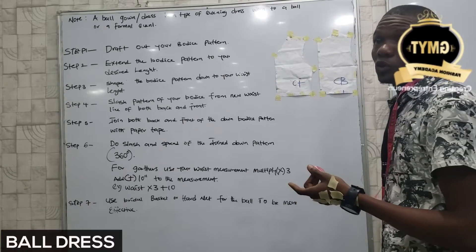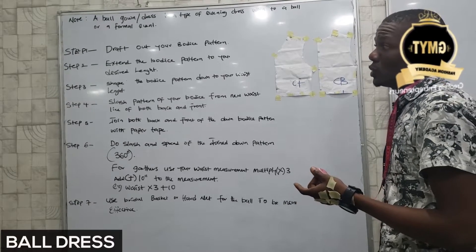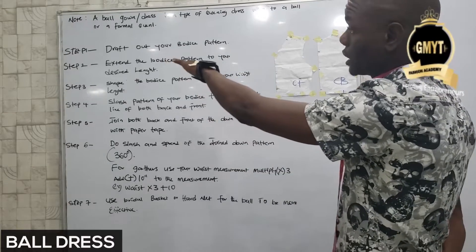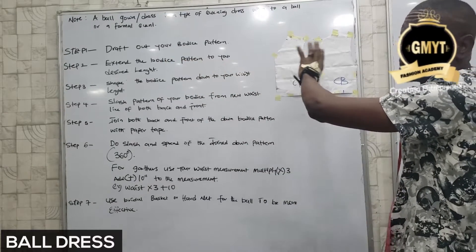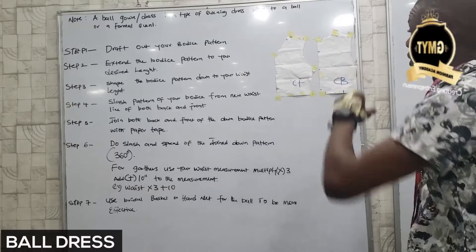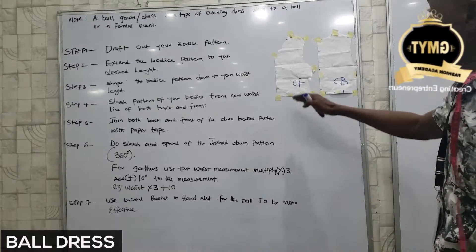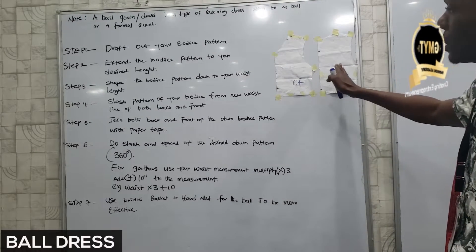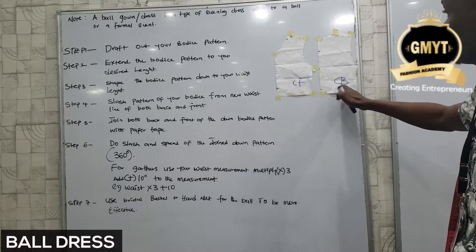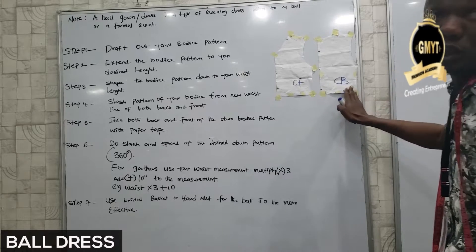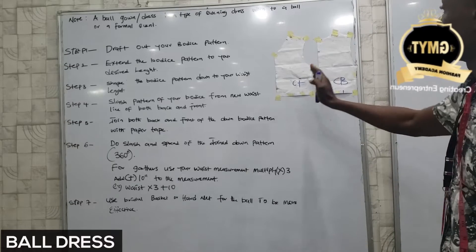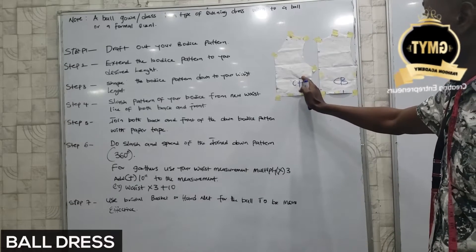Now the first stage for you to achieve your ball dress is to draft your pattern. The first step — we have draft your pattern. Your ball dress pattern consists of both back and front. Now if you look at the ball, this small part, I have my body pattern, I have my CF and I have my CB. This is the miniature of the pattern. So if you are making for yourself, you are making a big one. Now we have the miniature pattern.